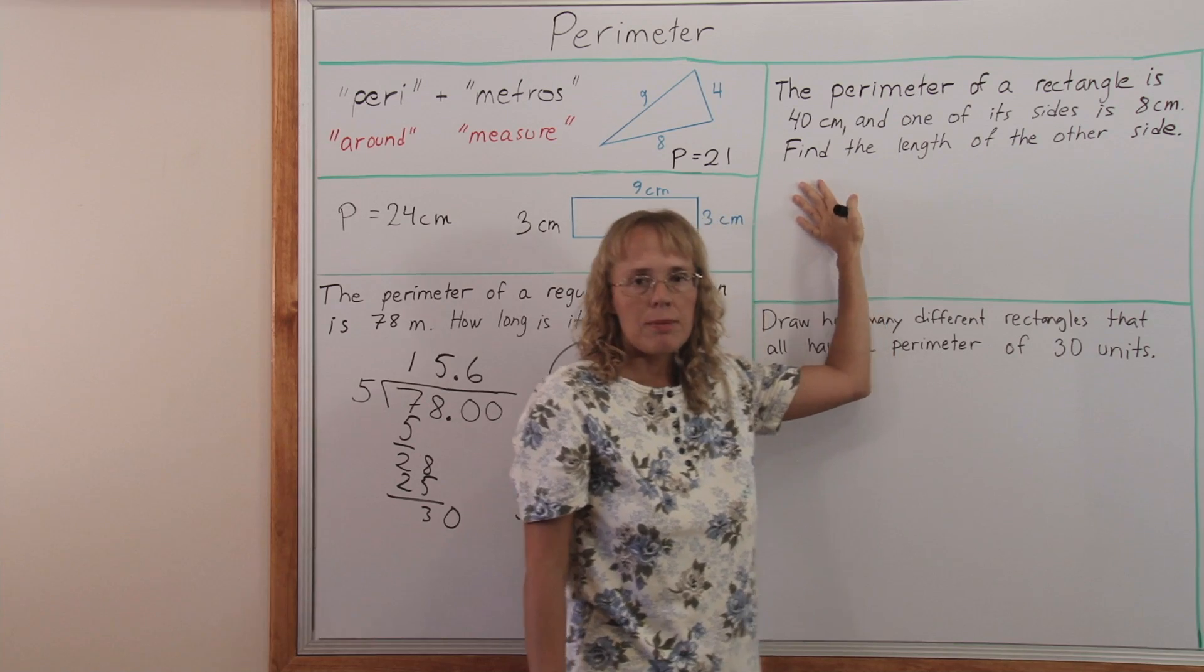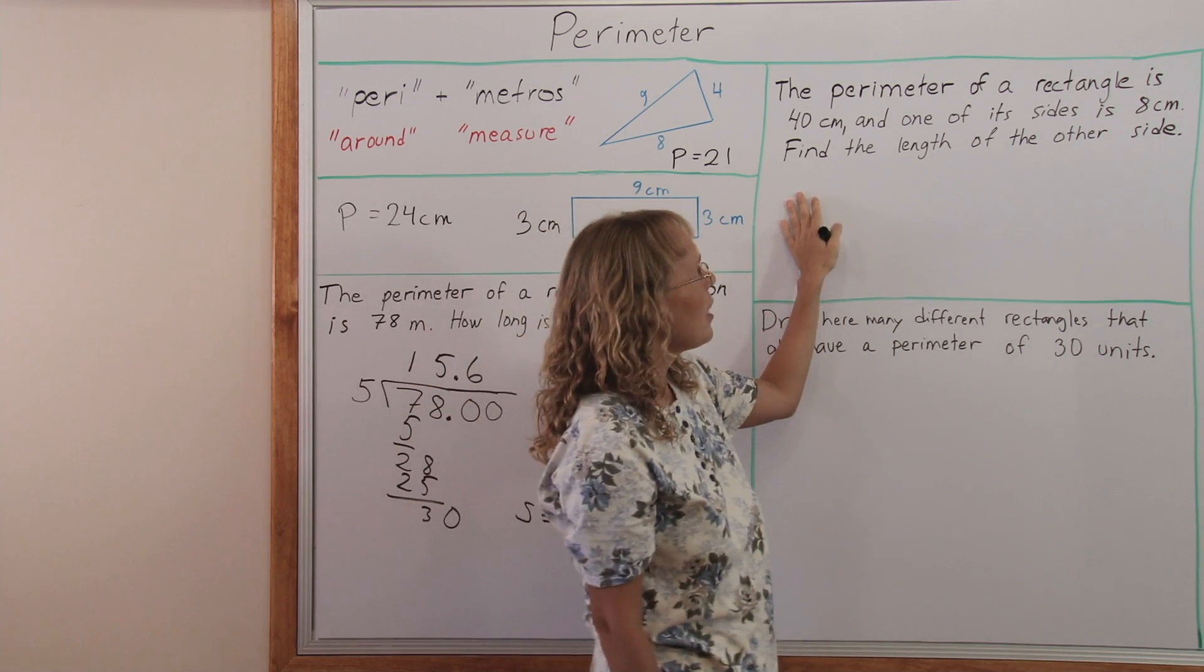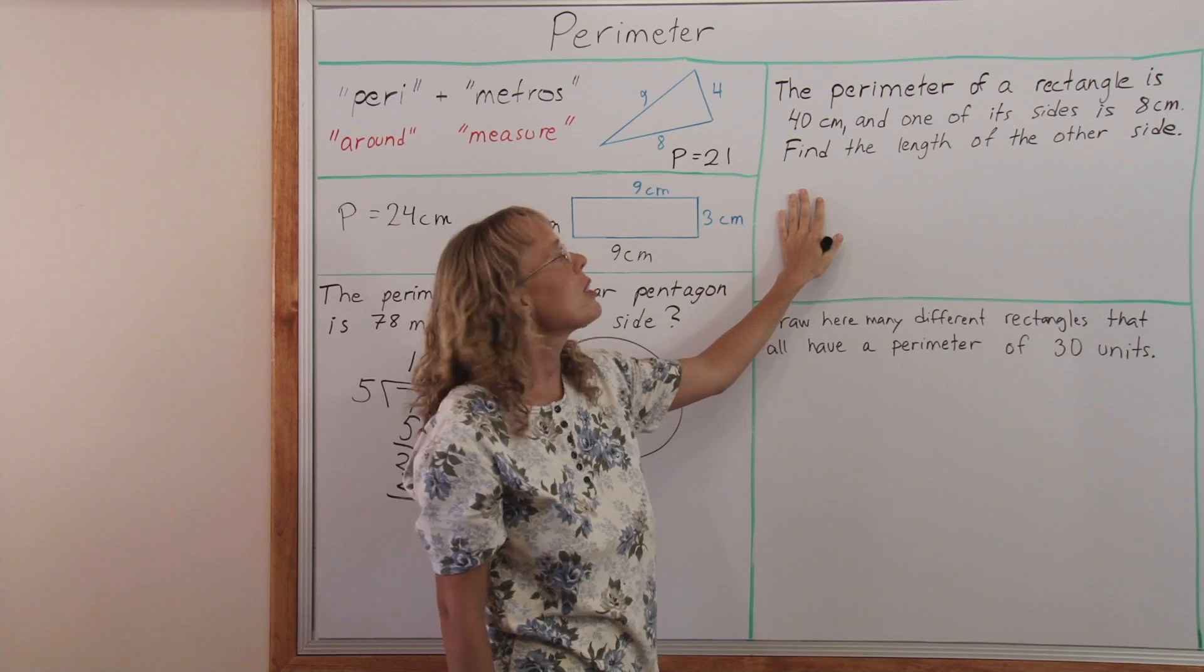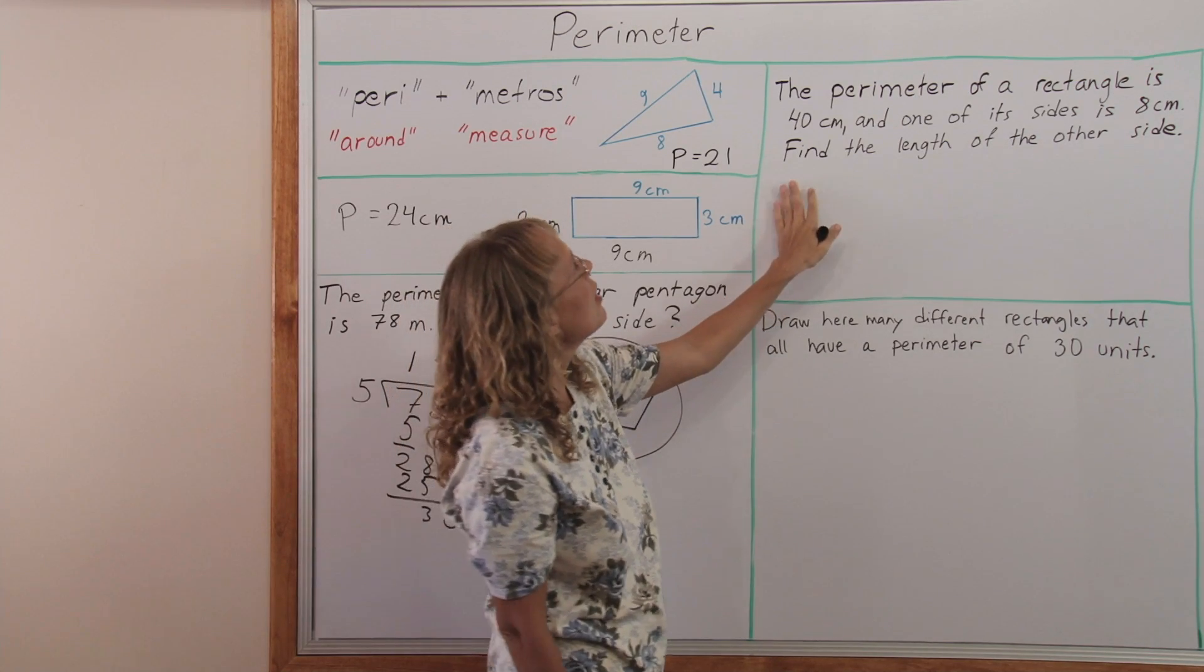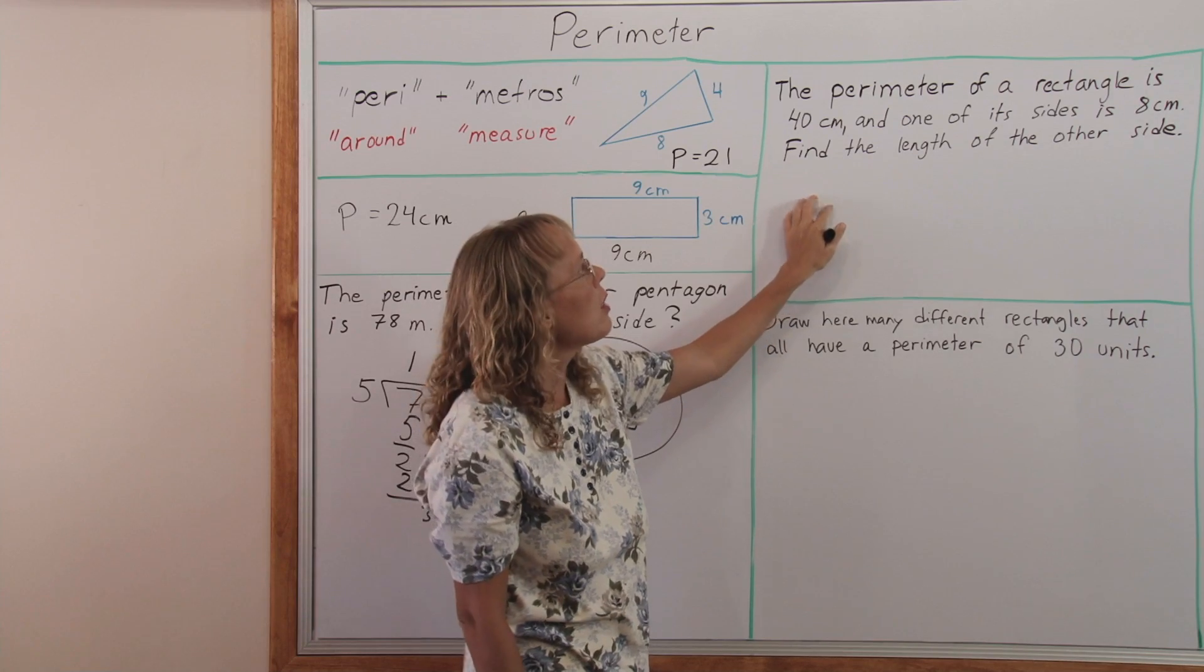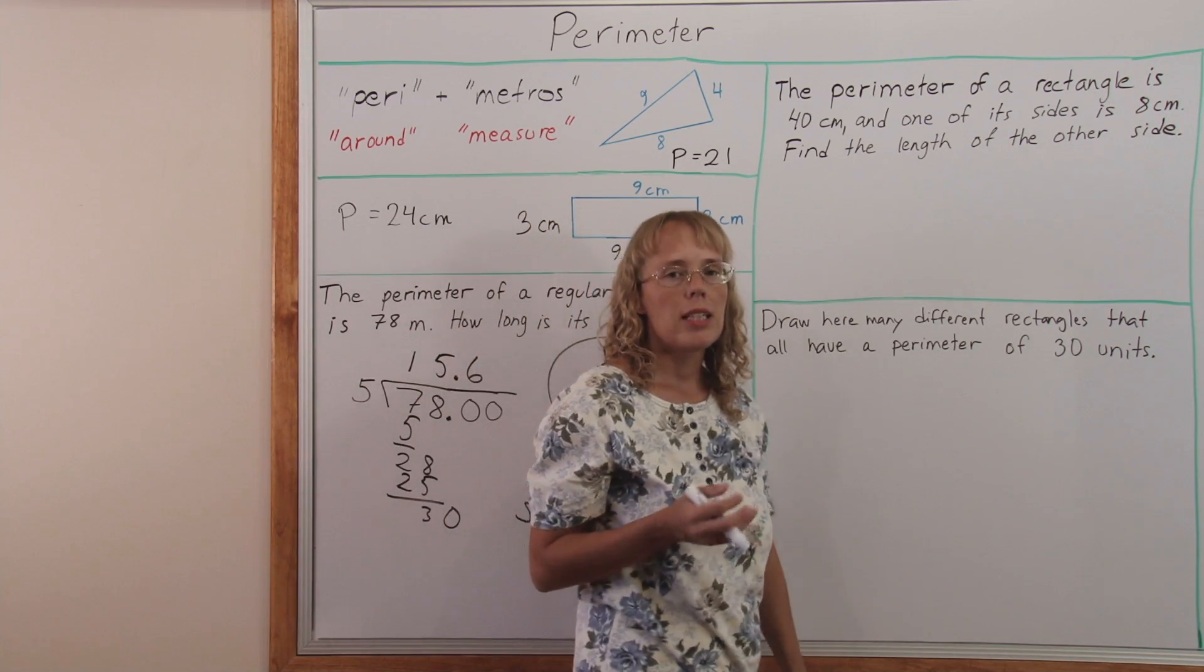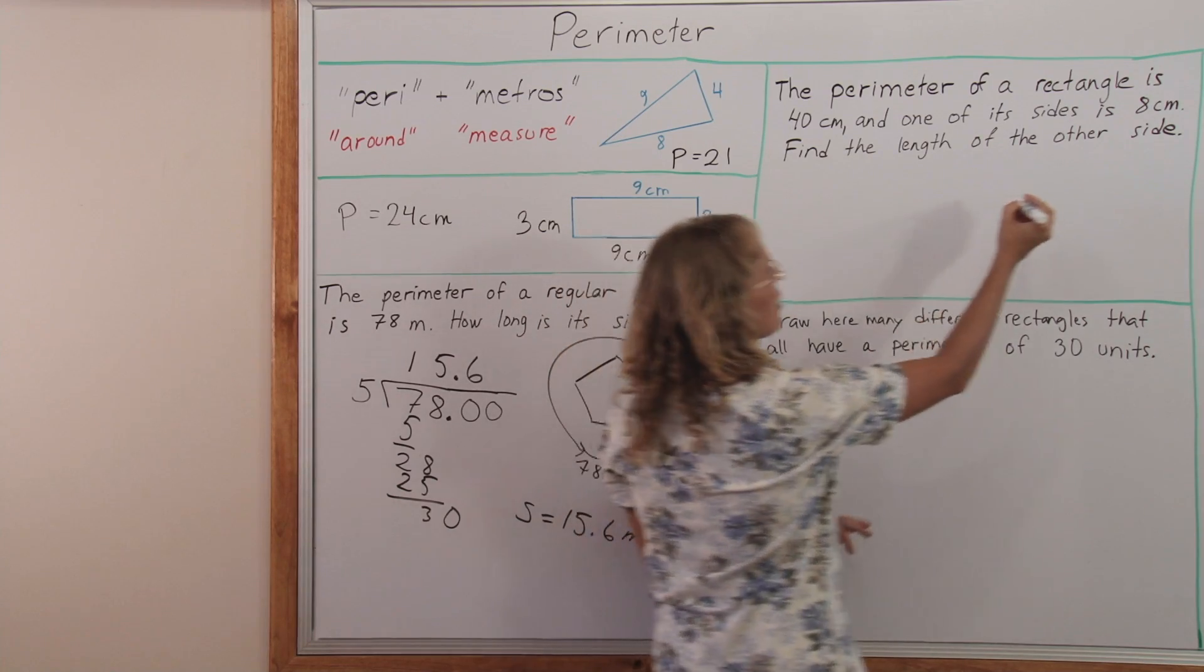This problem is very typical and it's found in all math textbooks. Again, it doesn't ask the perimeter, it gives you the perimeter. The perimeter of a rectangle is 40 centimeters and one of its sides is 8 centimeters. Find the length of the other side. Just start out by drawing or sketching a rectangle here.